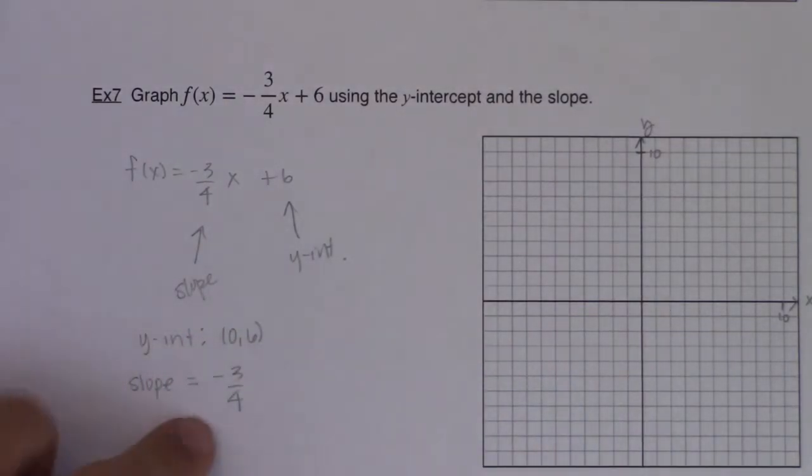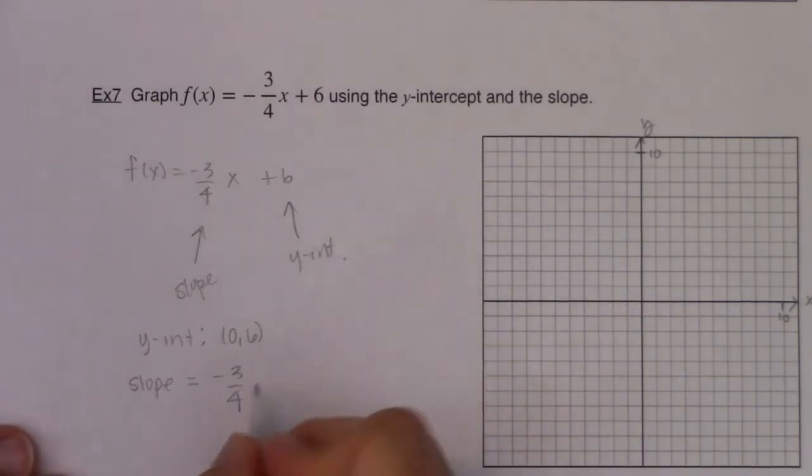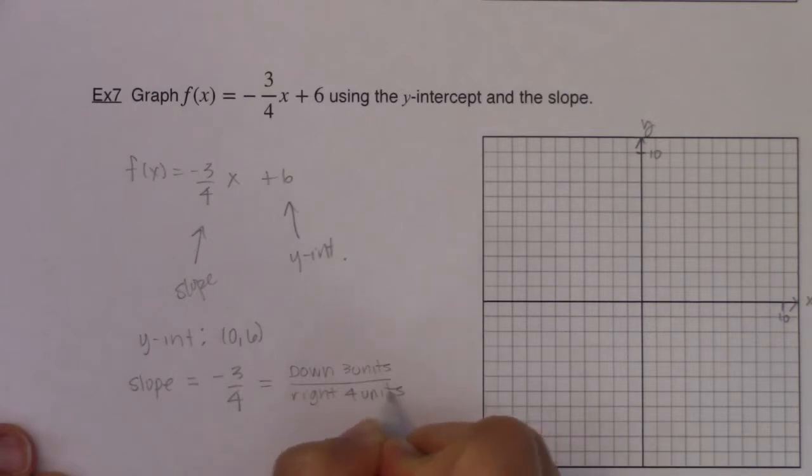Now this slope, to unpack this, we have to think about this as rise over run. You can write this fraction in a couple of different ways. I'll just leave the negative three on the numerator here. And so this is basically telling me to go down three units and then right four units.